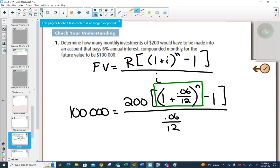Well, first of all, I could get rid of the 0.06 over 12 that's on the bottom if I did the opposite of dividing, which is multiplying. Go to my calculator, and 100,000 times by 0.06 over 12 is 500. So now I have 500 equals 200, 1 plus 0.06 divided by 12 to the N, minus 1.